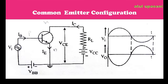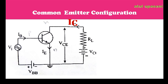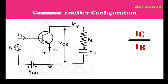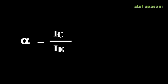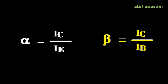In a common emitter transistor amplifier, the emitter is common for input and output. The output current is the collector current and the input current is the base current. The ratio IC to IB is denoted by beta, the current amplification factor in the common emitter configuration. So IC/IE is alpha and IC/IB is beta.